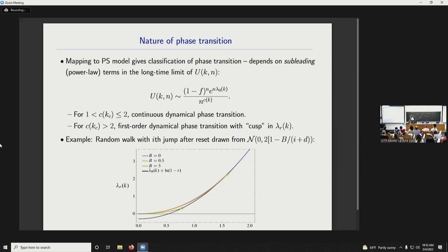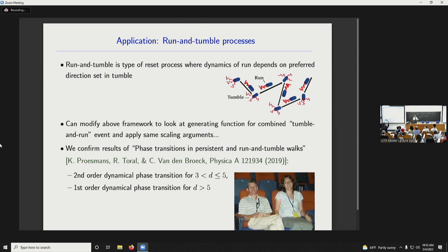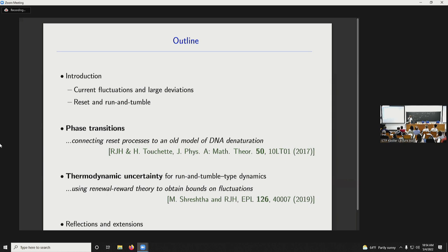Another thing you can do is check results from elsewhere. So here's an application that takes us back to run and tumble. Run and tumble, as I said, is just resetting the direction and you can modify the previous framework and it turns out to be easier to consider tumble and runs as combined events, but then you can do exactly the same thing. And what you find there is that you recover some results calculated in a quite different way by Christian van der Broek and collaborators that predict the order of a dynamical phase transition in this run and tumble model depending on the dimension. And that all comes very nicely out of our framework. Okay, and then don't worry, I see them waving a sign at me. The second part, much shorter. I want to tell you something about thermodynamic uncertainty in these kind of run and tumble processes. That's work with a former PhD student, Mayank Shrestha.